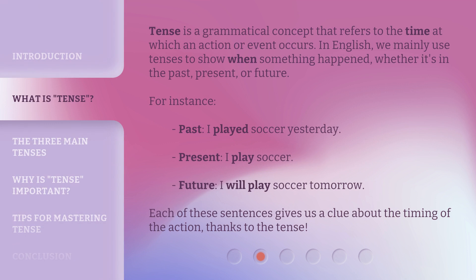Tense is a grammatical concept that refers to the time at which an action or event occurs. In English, we mainly use tenses to show when something happened, whether it's in the past, present, or future. For instance: past — I played soccer yesterday; present — I play soccer; future — I will play soccer tomorrow. Each of these sentences gives us a clue about the timing of the action, thanks to the tense.